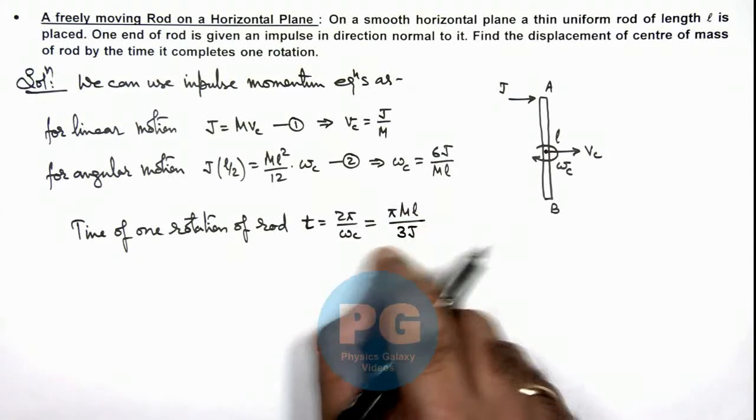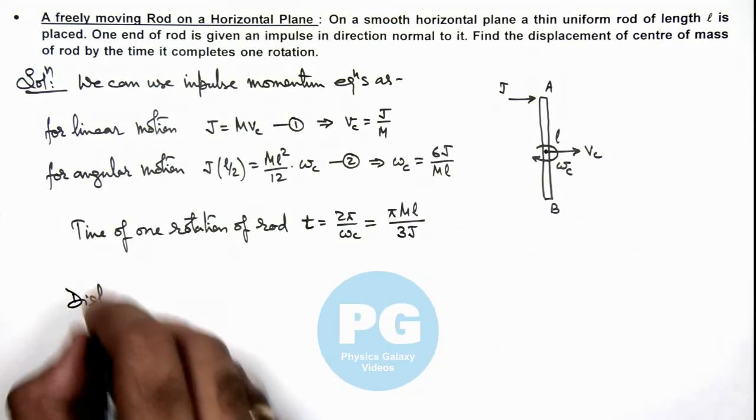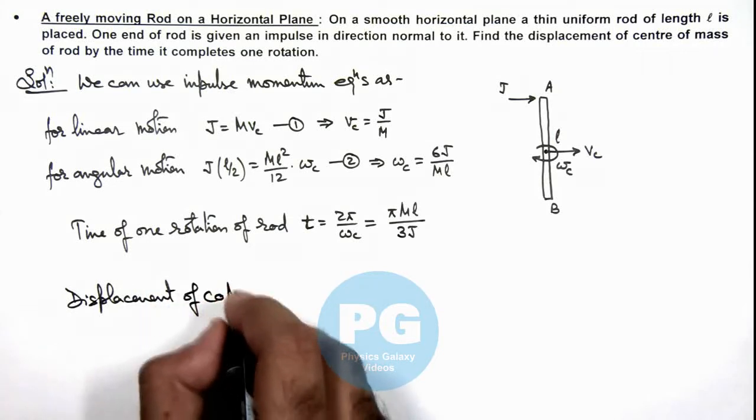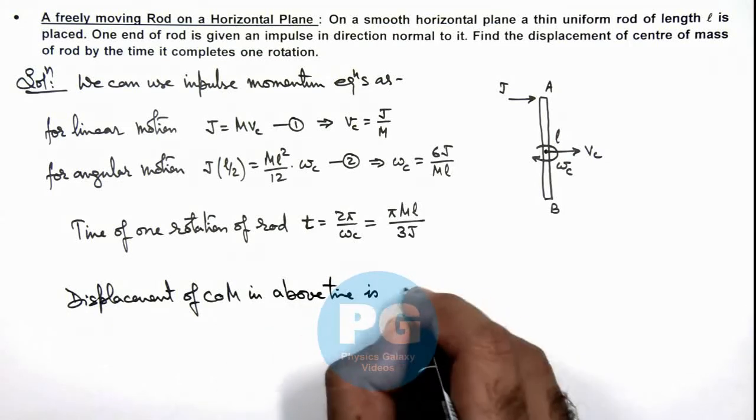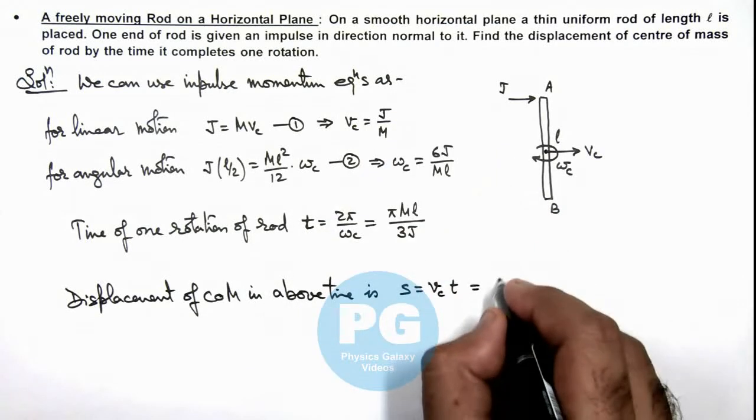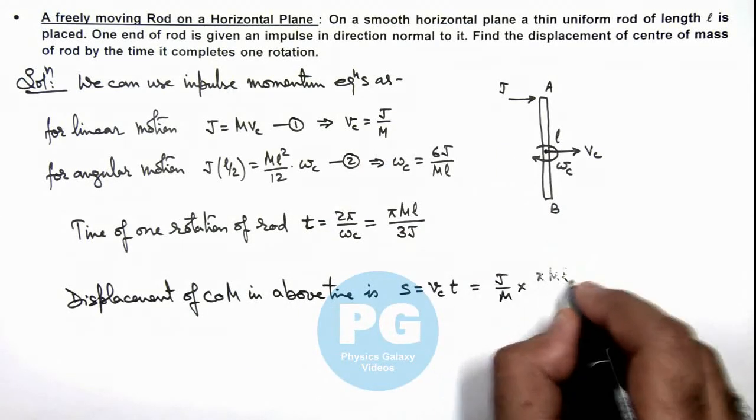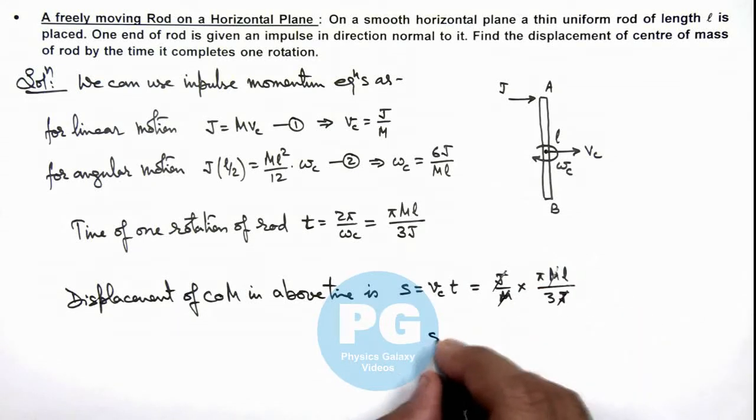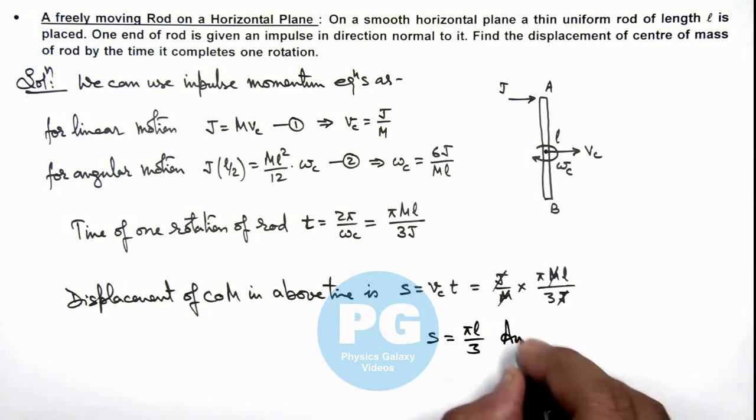And in this time, we wish to calculate the displacement of center of mass, then we can write displacement of center of mass in above time is s, we can write as v_c t. And v_c we calculated as j by m multiplied by the time is pie ml by 3j. So here j and m gets cancelled out and the value of this displacement we are getting is pie l by 3. That is the result of this problem.